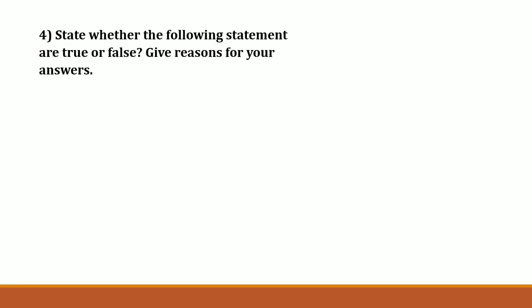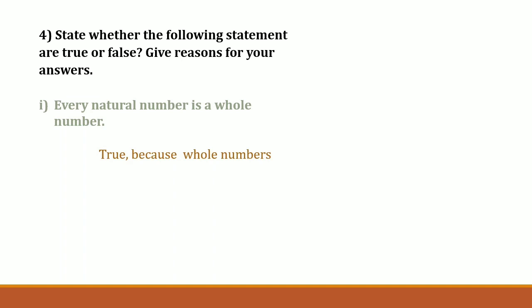The fourth question reads: state whether the following statements are true or false, and give reasons for your answers. The first sub-question is: every natural number is a whole number. The answer is true, since natural numbers are in the set of whole numbers. Whole numbers are a set of numbers consisting of natural numbers including zero.